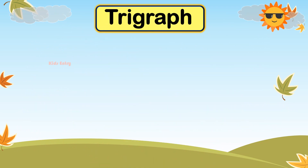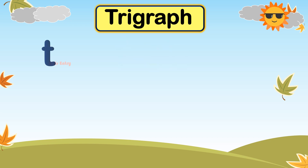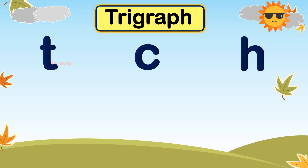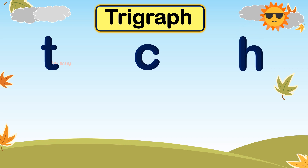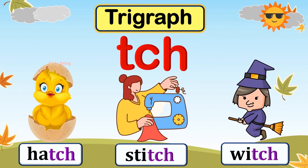Let's see and learn about the trigraph TCH. Letter T makes the sound T, letter C makes the sound K, and letter H makes the sound H. These three letters join together and make the sound CH. Let's see some words with the CH sound.